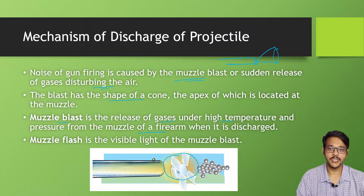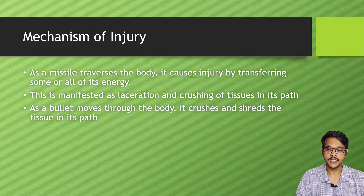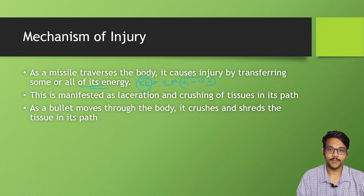Coming to the mechanism of injury: as the missile is projected toward the body, it causes injury by transferring some or all of its energy. All projectiles have kinetic energy, which is calculated using the mass and velocity of the projectile as it enters and exits. This kinetic energy is transferred to the tissue, and because of this energy transfer, injury occurs.